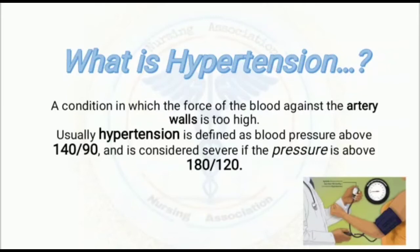Hypertension is considered severe if the pressure is above 180 by 120 mmHg. So 140 systolic and 90 diastolic is the threshold — a patient is considered hypertensive if blood pressure crosses 140 by 90, and if it reaches 180 by 120 mmHg, the patient is classified as having severe hypertension.